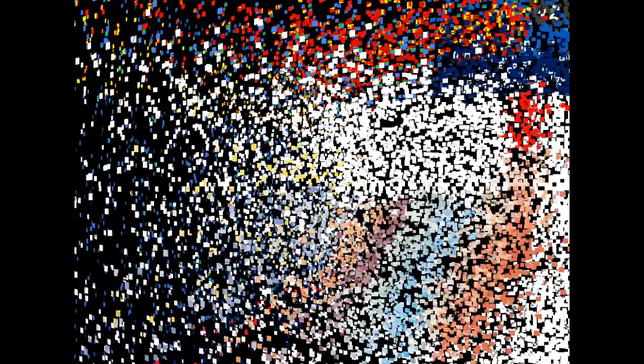This shows a perspective view of the ionization energies. The higher columns are the higher ionization energies; the lower columns are the lower ionization energies. It's greater in the upper right-hand corner of the periodic table, and that's where helium is. Helium has the highest ionization energy.